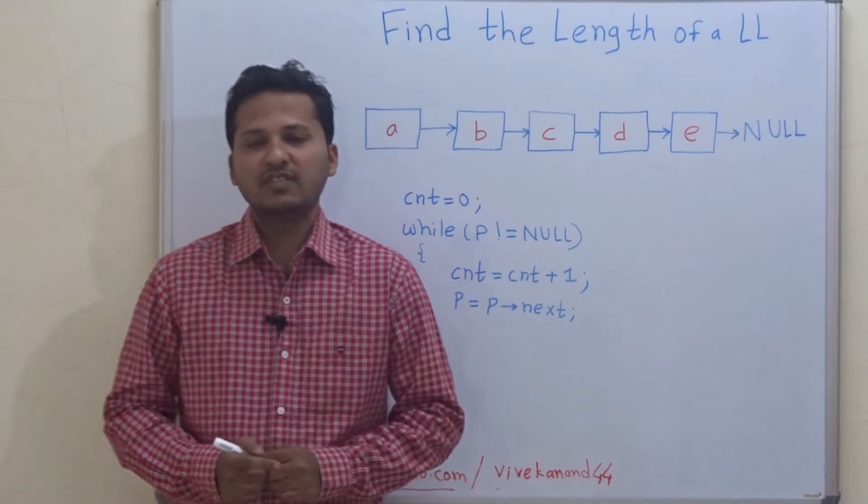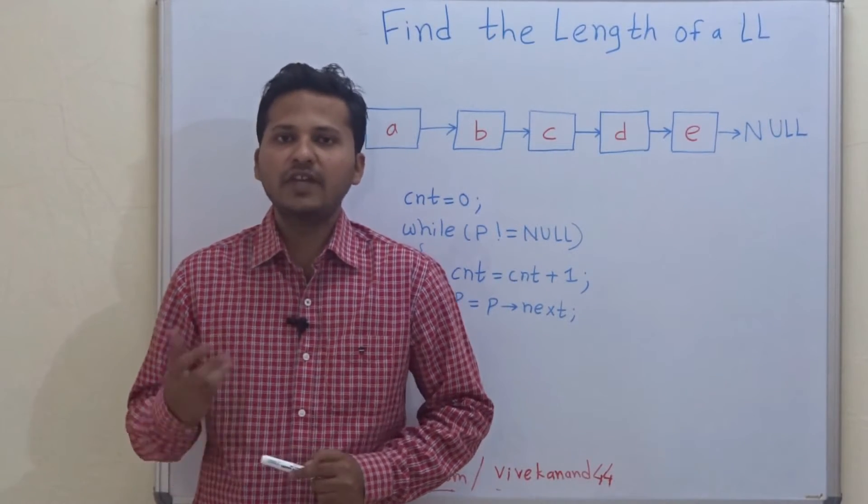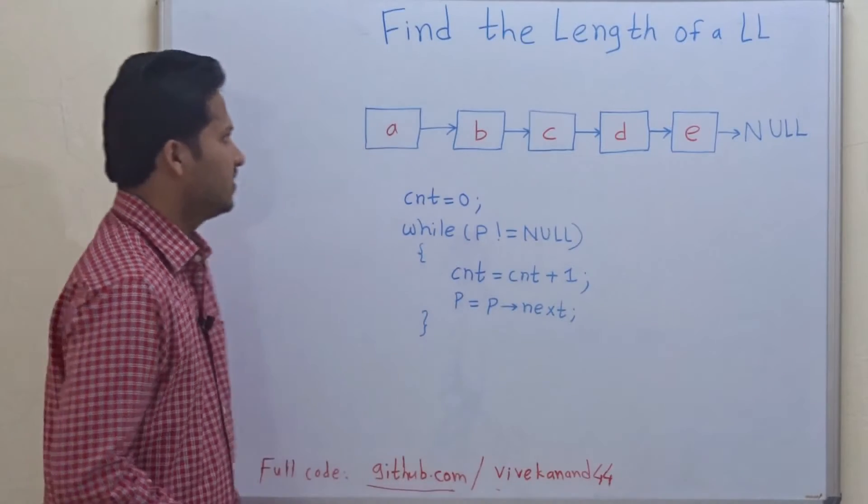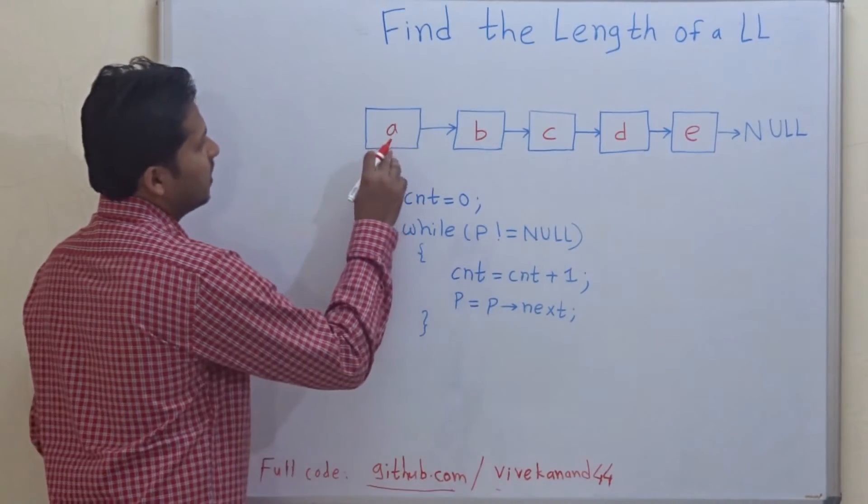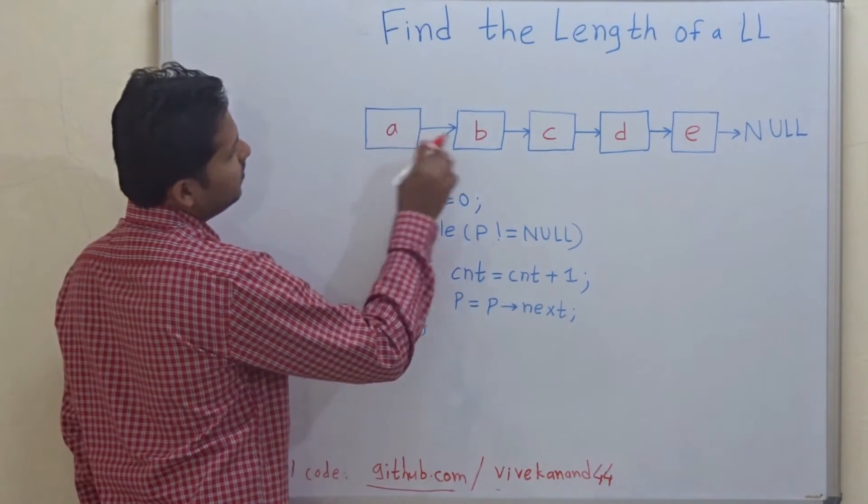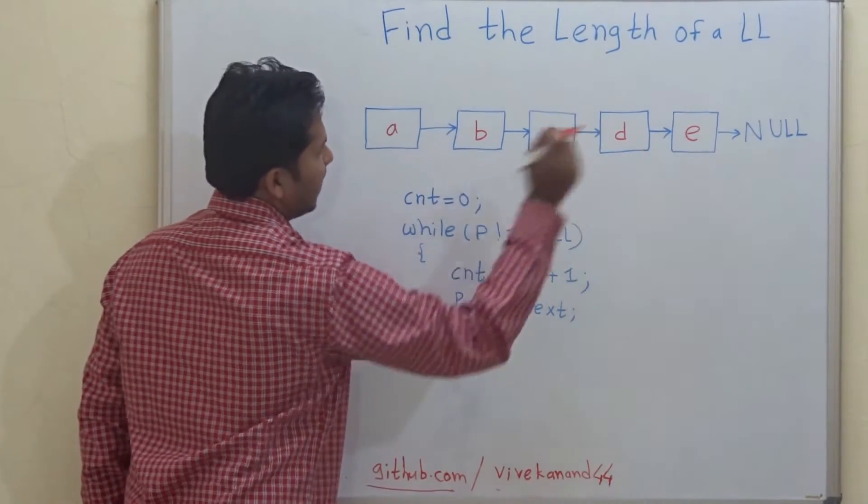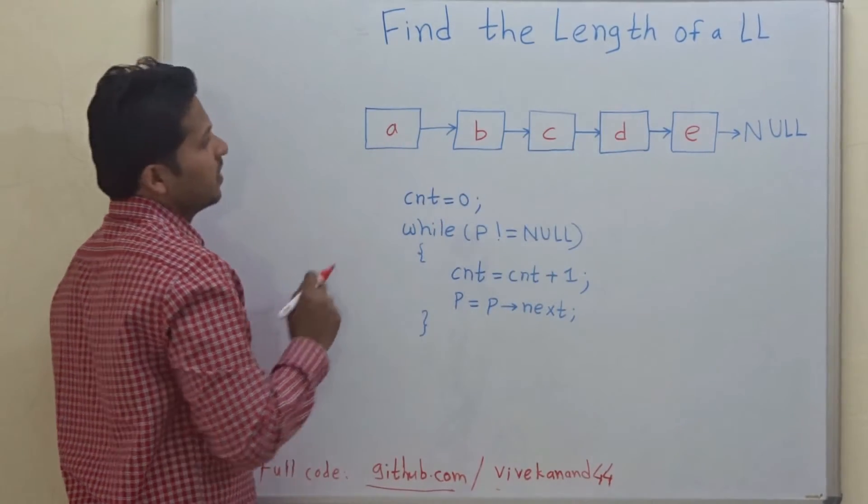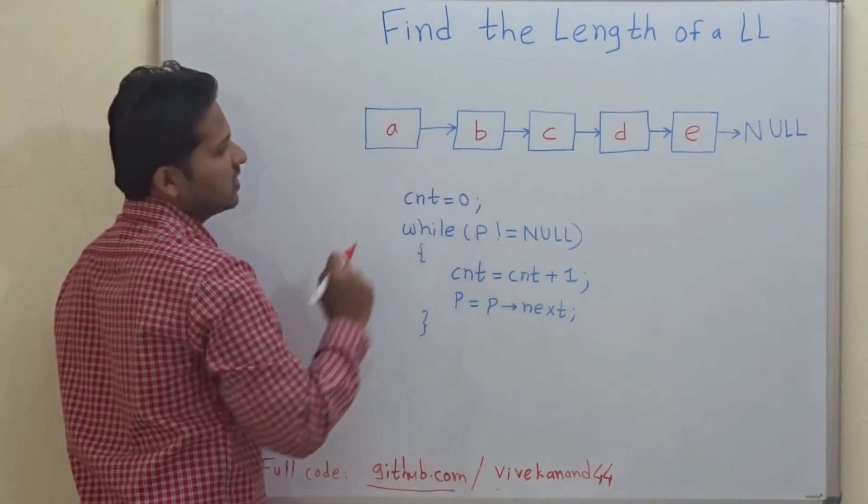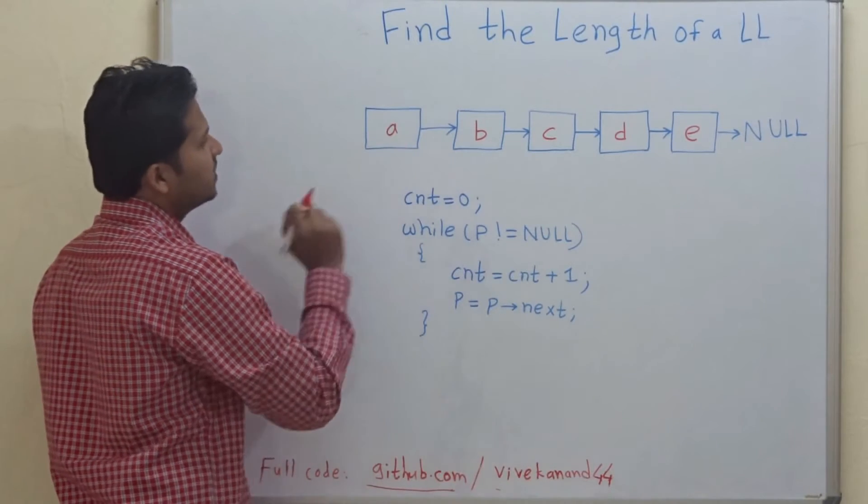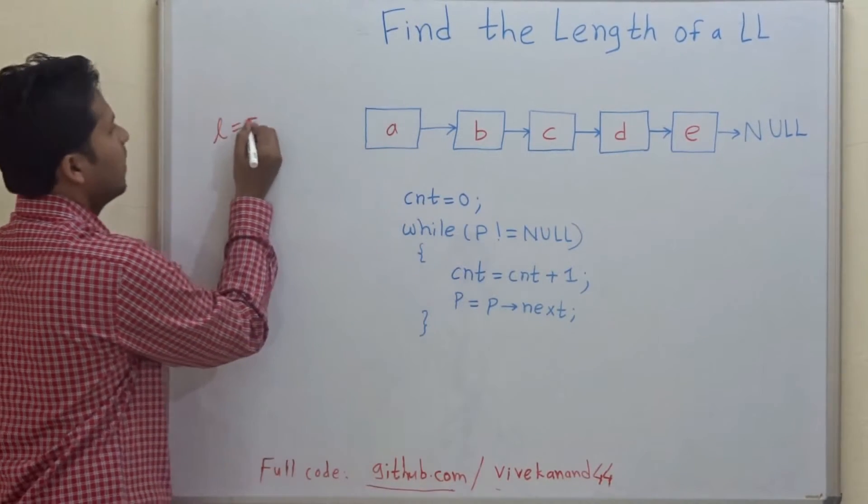Hello friends, today we are going to see how to find the length of a linked list. Let's see the example. This is the linked list: a, b, c, d, e, and the last node points to null. There are five nodes in this linked list, and the length of this linked list is equal to five.